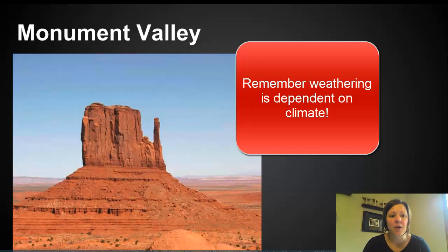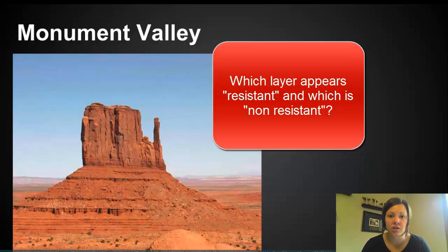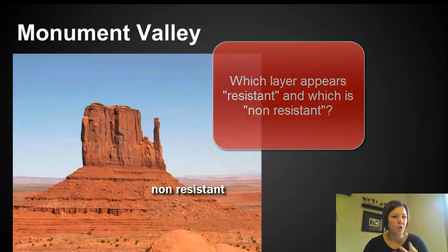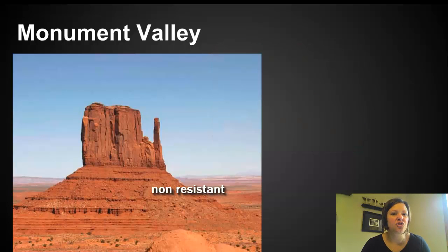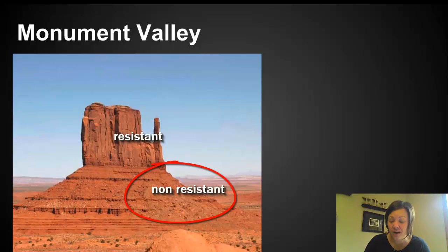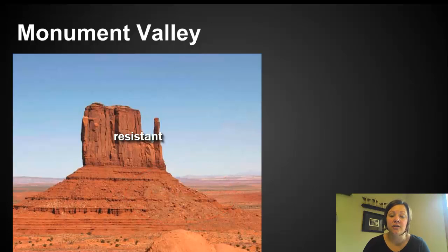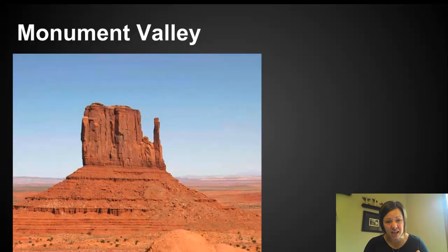Let's do a little more practice. We have a structure in Monument Valley, which is in Utah — so we know we're dealing with frost wedging. Which one do you think is shale? If you said the sloping layer, you're right. The top layer is sandstone — you would either guess sandstone or limestone and dig deeper to find out which. By looking at the structure and knowing about the climate, we can identify the type of rock.